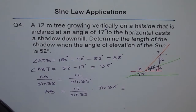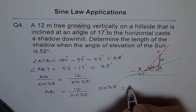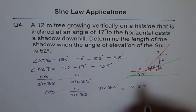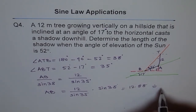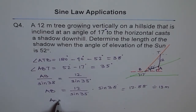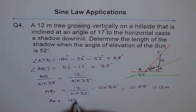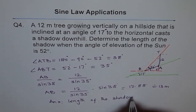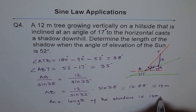So let's calculate: 12 divided by sine of 35 equals 20.92, times sine of 38, which gives 12.88 meters. So that is the length of the shadow, approximately 13 meters. Our answer for the length of the shadow is 13 meters.